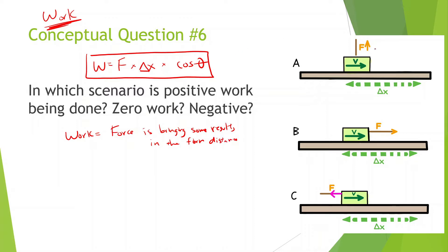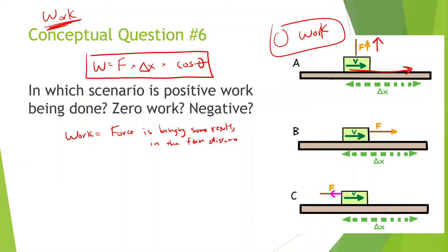Let's look at this first scenario. We have a force going up and the object is moving to the right. Even though there's a force going up and there is a displacement, the object isn't going up at all, so there's going to be zero work. The angle between the displacement and force is 90 degrees, and cosine of 90 is equal to zero.